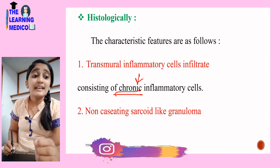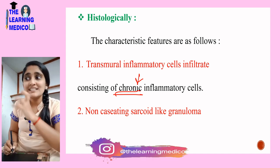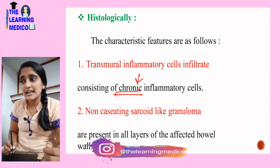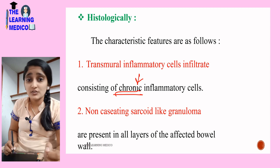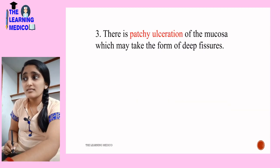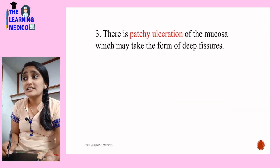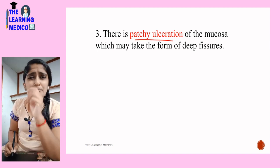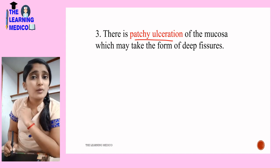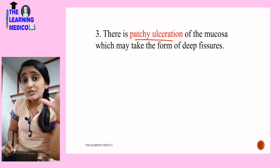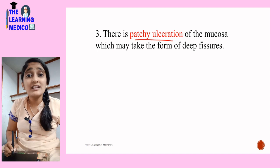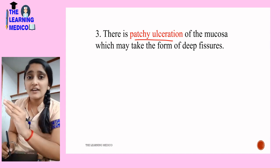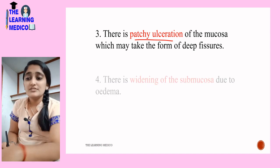There are non-caseating sarcoid-like granulomas — caseating means cheese-like necrosis, so here there will be no cheese-like necrosis. These are present in all layers of the affected bowel wall. Next, there is patchy ulceration of the mucosa, which may take the form of deep fissures in the areas of patchy ulceration.